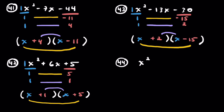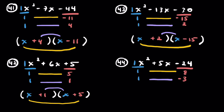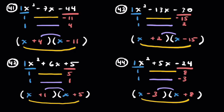Problem 44: x squared plus 5x minus 24. Leading coefficient of 1. For negative 24, they have to be 5 apart — let's go with 8 and 3. Positive 5 means 8 is positive and 3 must be negative. Pairing and filling in: (x + 8)(x − 3).